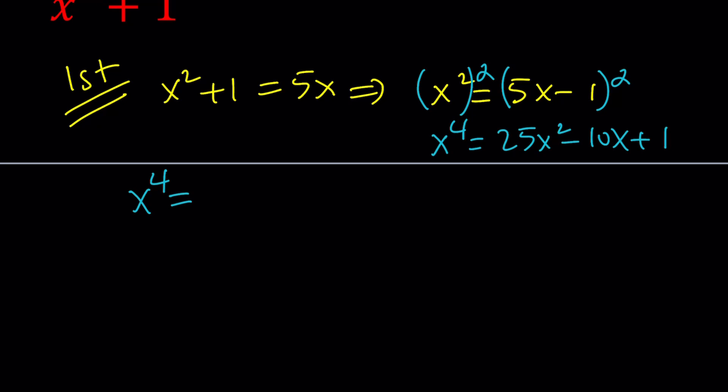x to the 4th equals 25. And now we're going to replace x squared with 5x minus 1 and then square it minus 10x plus 1. And now we need to square 5x minus 1. Actually, there's no square there, so it should just be that. So let's simplify it.